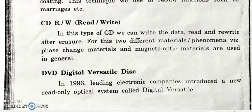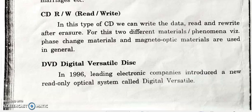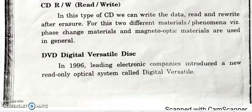CD read and write allows writing, reading, erasing, and rewriting of data — all these steps can be performed. Here two different materials are used: one is phase change material and the second is magneto-optical material. By using these two different materials, information is recorded and read out. All the read, write, rewrite, and erase steps can be easily done.